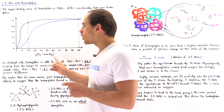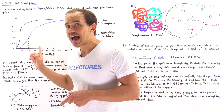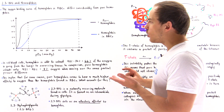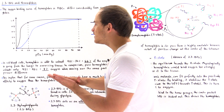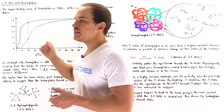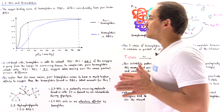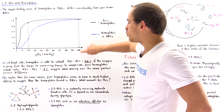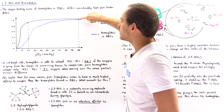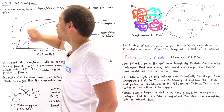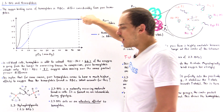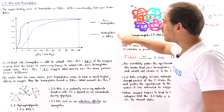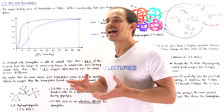Notice that the blue curve is shifted to the right with respect to the black curve. To see the difference, let's look at how much hemoglobin unloads going from the lungs to the exercising tissue. Inside the lungs, the partial pressure is about 100 millimeters of mercury. Finding the corresponding y-value on both curves gives the same value of about 0.98 — so 98% of both the pure hemoglobin and the hemoglobin in red blood cells is saturated with oxygen.